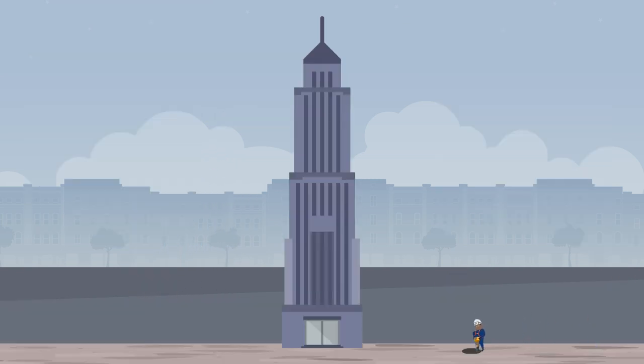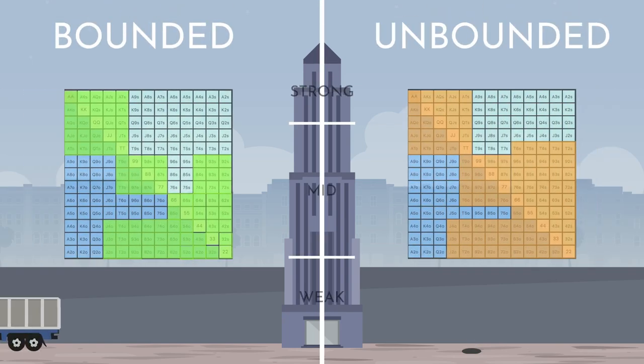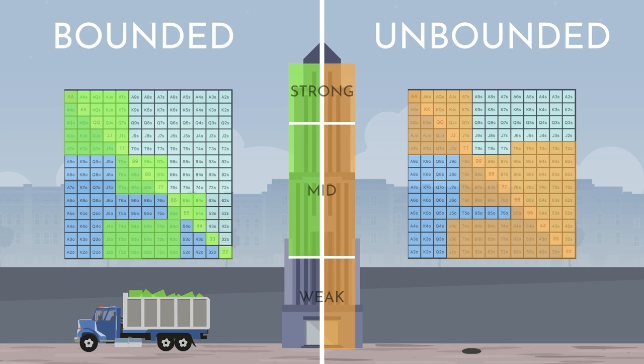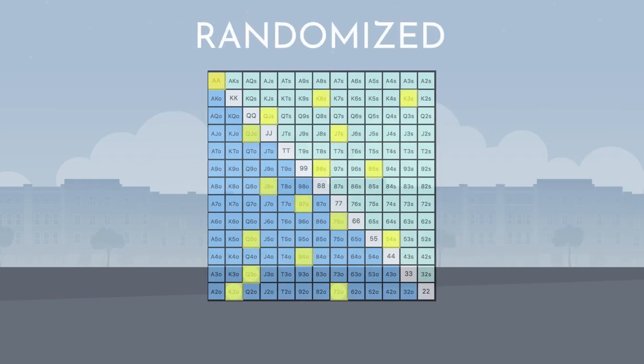Similarly, there are bounded and unbounded ranges. These are essentially the inverse of capped and uncapped ranges—ranges that either do or do not contain the very weakest hands. Finally, a randomized range is exactly what it sounds like: